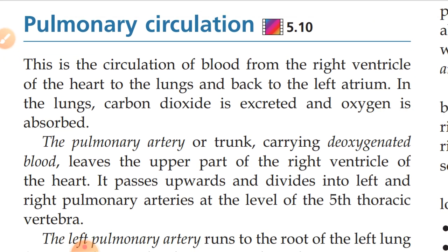First, the pulmonary artery or trunk carries deoxygenated blood and leaves the upper part of the right ventricle of the heart. It passes upward and divides into the left and right pulmonary arteries at the level of the fifth thoracic vertebra.